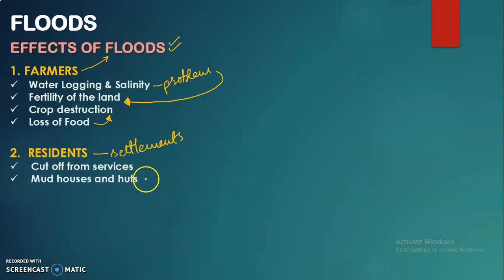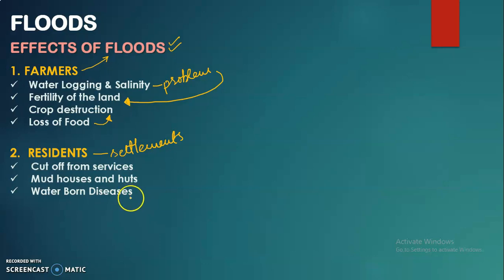Mud houses and huts have less resistance and cannot survive flood conditions, so people living in such houses face greater damage. The third effect on residents is waterborne diseases. The stagnant floodwater gets polluted, and waterborne diseases spread among people living in flooded settlements.